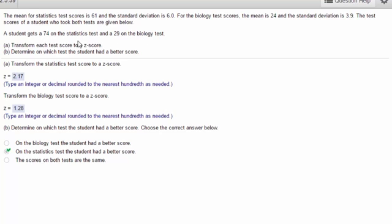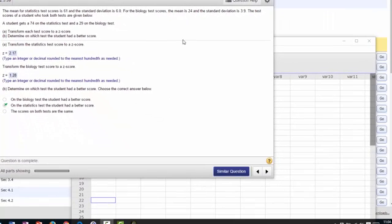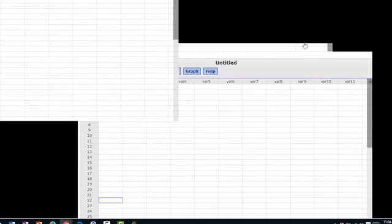And the question is: a student gets a grade on the statistics test and another grade on the biology test, and we need to transform those scores to z-scores and then use the z-scores to decide on which test did the student have the better score. Okay, let's start, and I'm going to bring up StatCrunch.